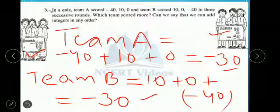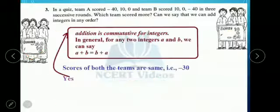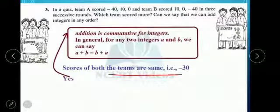Now second part. Can we say that we can add integers any way? You have learnt we will get the same answer. Scores of both the teams are same, that is minus 30.